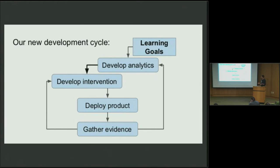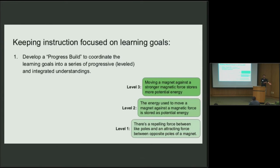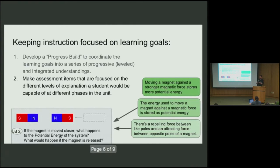Just because being concrete is helpful for understanding, let's do a quick example. Say you're making a unit on magnetism. The assessment and analytics person would first establish a pathway through the learning goals — a progress build or learning progression — that allows students to make progressively more sophisticated explanations as they accumulate ideas. The second step is to instantiate that in an assessment item: a question that's easy to evaluate in terms of whether a student is leveraging those concepts.